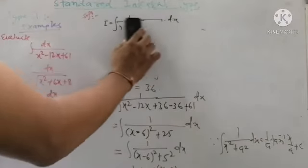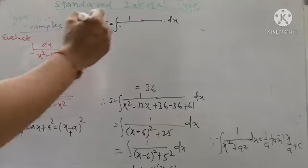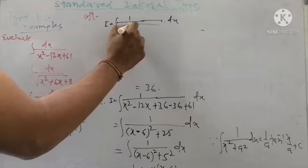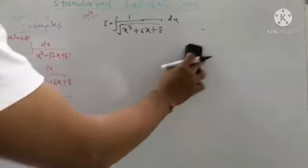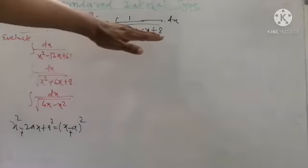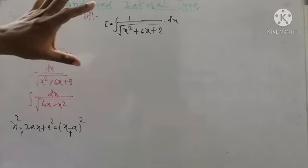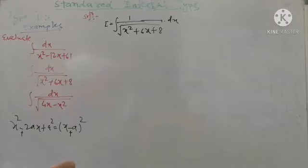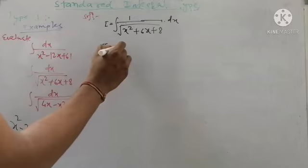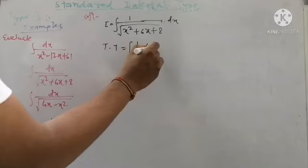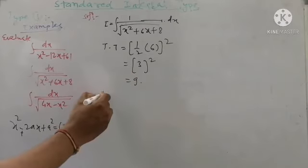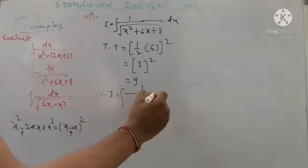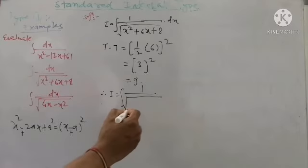Second example: I = integration of 1 upon root of (x² + 6x + 8). This is again a Type 1 example since the numerator is 1, the denominator is a quadratic polynomial under a square root, and a term of x is given. The coefficient of x² is 1. We calculate the third term: (1/2 × 6)² = 3² = 9.